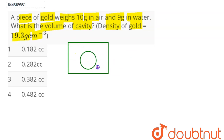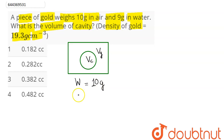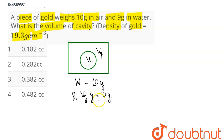Let the volume of this gold be Vg. The weight of this gold is given as 10 grams. So this weight equals density of gold (ρg) multiplied by volume of gold (Vg) multiplied by g, which equals 10g. The density of gold is given as 19.3 g/cm³. So ρg × Vg = 10. This is equation number one.